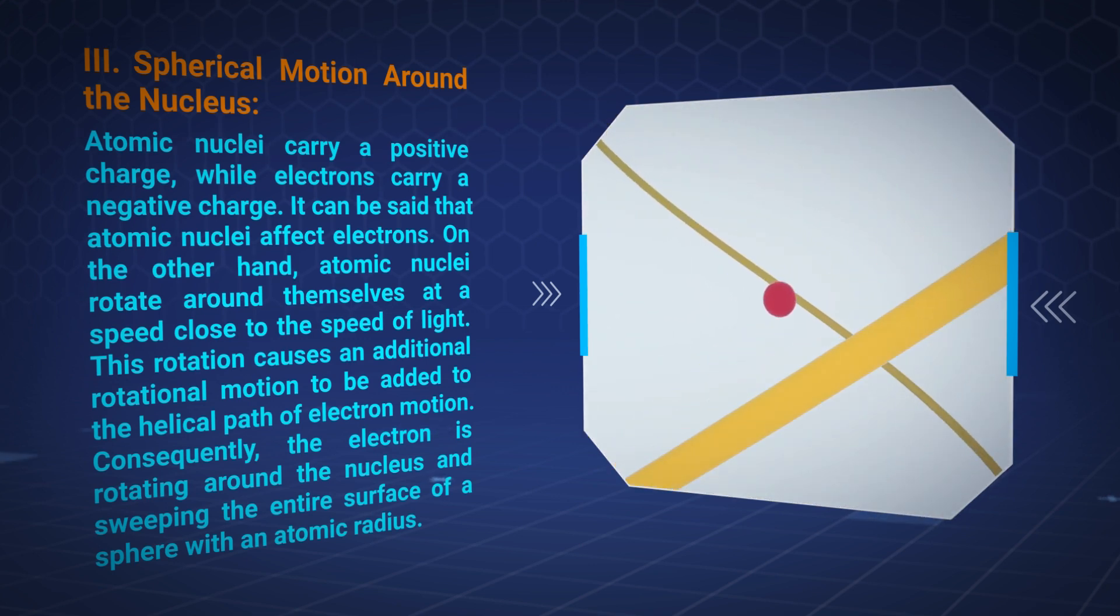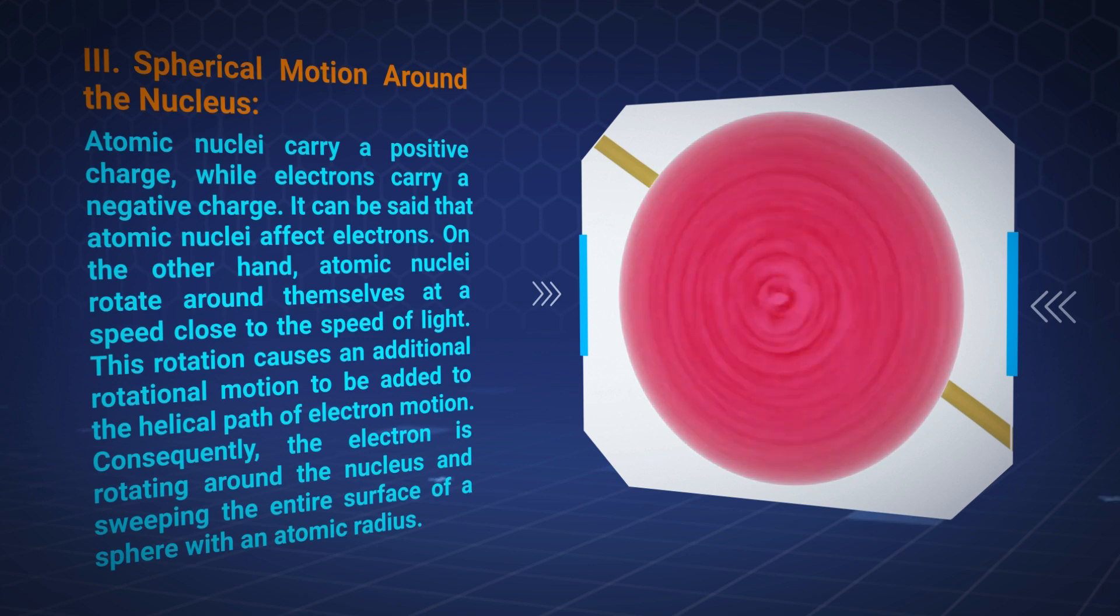Spherical motion around the nucleus: Atomic nuclei carry a positive charge while electrons carry a negative charge. It can be said that atomic nuclei affect electrons. On the other hand, atomic nuclei rotate around themselves at a speed close to the speed of light.